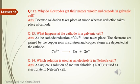Question number 12: why do electrodes get their names — anode and cathode — in a galvanic cell? Because oxidation takes place at the anode, whereas reduction takes place at the cathode. Oxidation means loss of electrons, while reduction means gain of electrons.